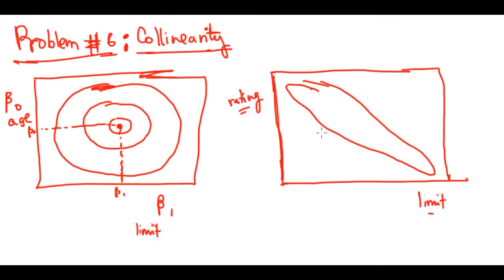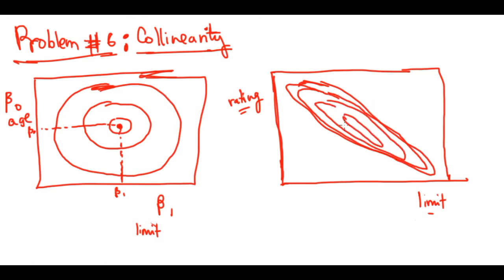If you have a bad credit rating, you probably also have a low limit — so they are related. When you draw the RSS contours for these collinear predictors, they come out very narrow, and the best combination spans a range along that narrow shape rather than a single clear point.